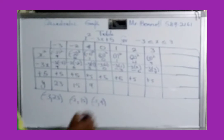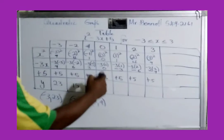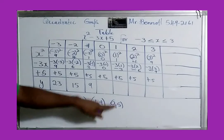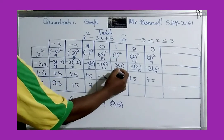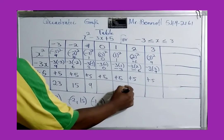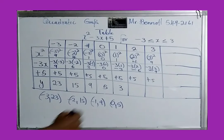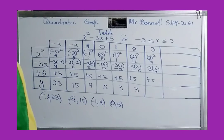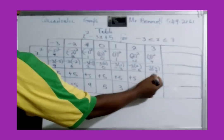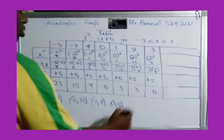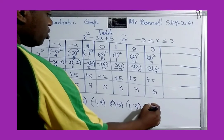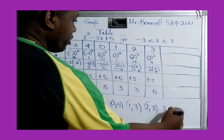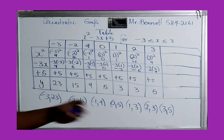For x = 0: 0 plus 0 plus 5 is 5 — this is the y-intercept. For x = 1: 1 minus 3 is negative 2, plus 5 gives positive 3. For x = 2: 4 minus 6 is negative 2, plus 5 gives 3. For x = 3: 9 minus 9 is 0, plus 5 is 5. So x = 1 gives 3, x = 2 gives 3, x = 3 gives 5.